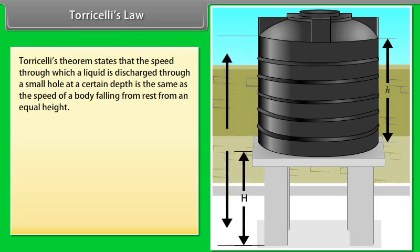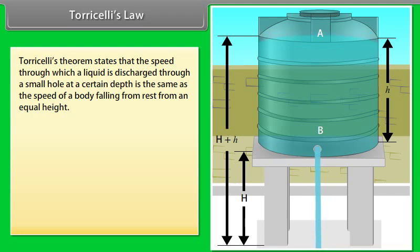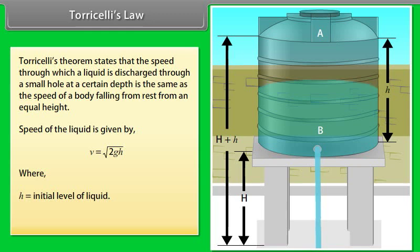The speed through which a liquid is discharged through a small hole at a certain depth is the same as the speed of a body falling from rest from an equal height. Speed of the liquid is given by V equals square root of 2gh, where H is the initial level of liquid and G is the gravity constant.